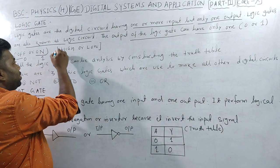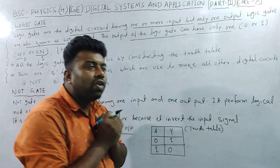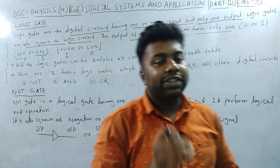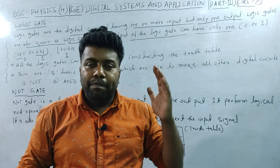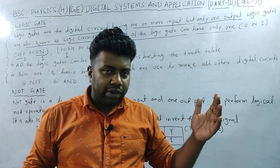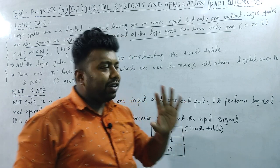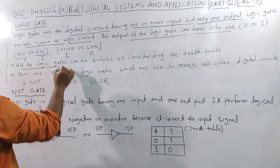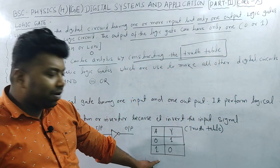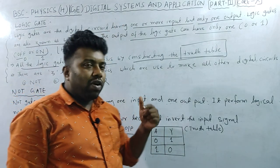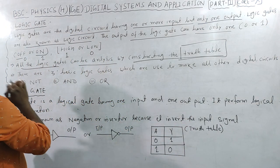Zero corresponds to a low signal, one corresponds to a high signal. This is a digital module — the output value is either zero or one. All the logic gates can be analyzed by constructing the truth table. Each gate can be explained using the help of a truth table.